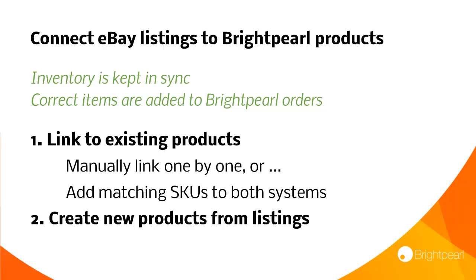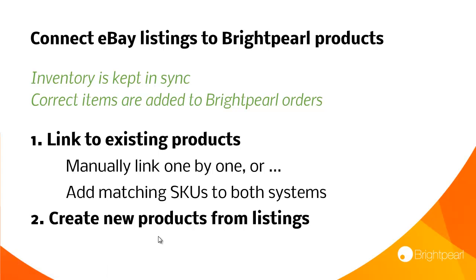There are two options here: we can link to existing Brightpearl products, or we can create new Brightpearl products from your eBay listings. First of all, let's link an existing product and we'll do it one by one, and later I'll show you how to automatically do this by SKU.